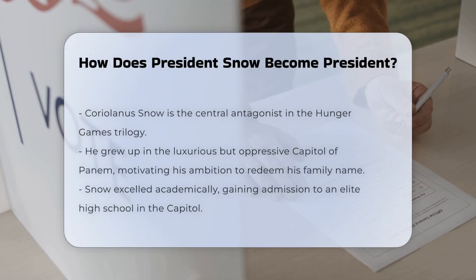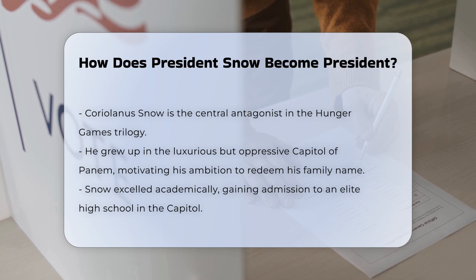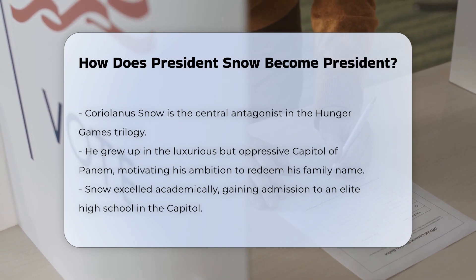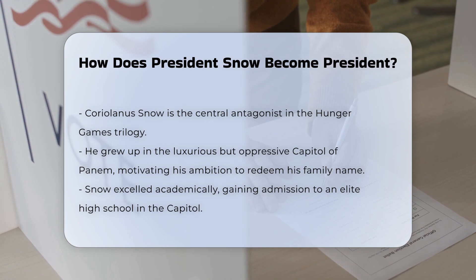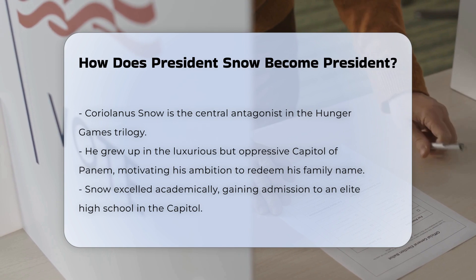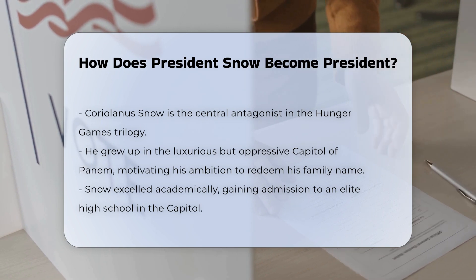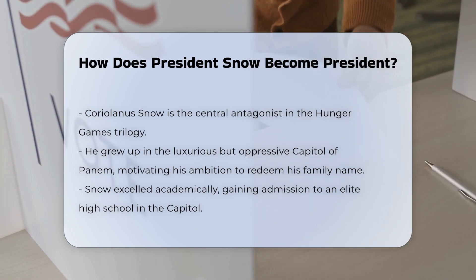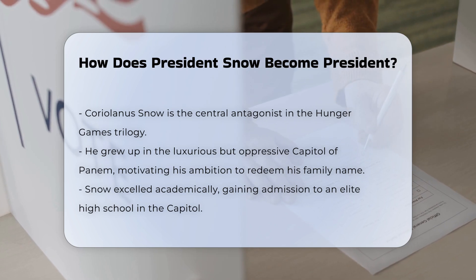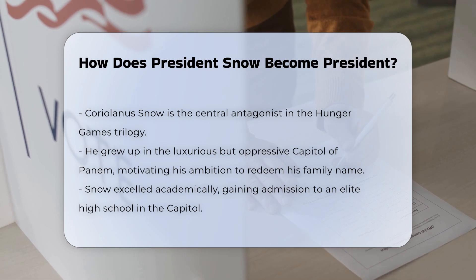To understand how President Snow ascended to power, it's crucial to delve into the backstory of Coriolanus Snow, the central antagonist in the Hunger Games trilogy. Early life and ambitions: Coriolanus Snow grew up in the decadent capital of Panem, an environment known for its luxury, high fashion, and ruthless political oppression. His early life was marked by a desire to rise through the ranks and redeem his family name, which was a significant motivator for his actions.